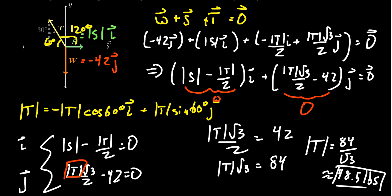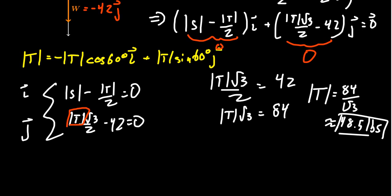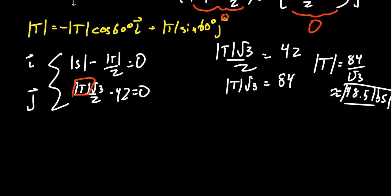Now that we know the tension, we could substitute that back in to our previous equation right here and solve for S, right? So S here minus, we're going to take 84 over the square root of 3 and times that by 1 half. This is equal to 0.